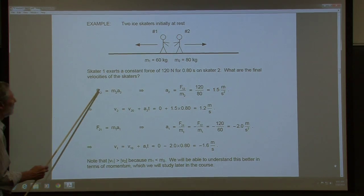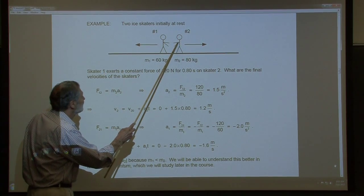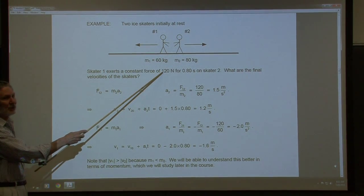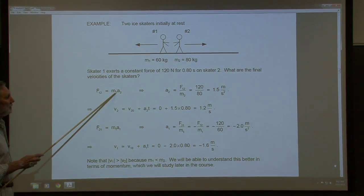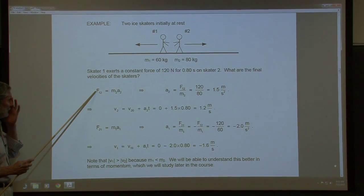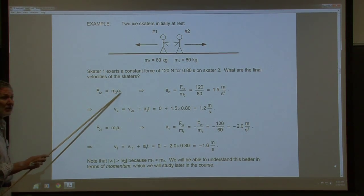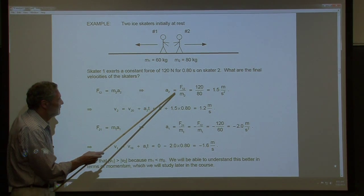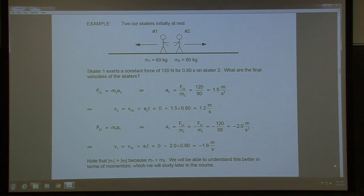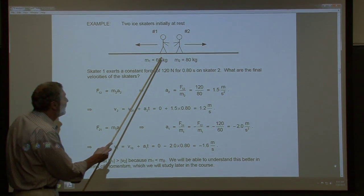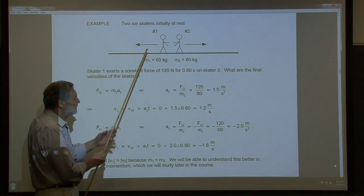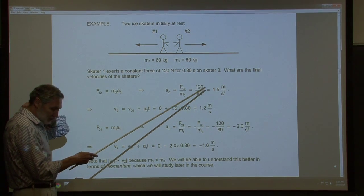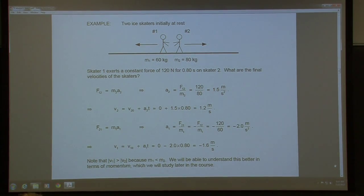Let's write down Newton's Second Law, focusing on the second skater first. F₁₂ is the force of one on two — 120 Newtons — and that's going to cause an acceleration. The force equals mass times acceleration, so we solve for acceleration. We plug the numbers in and get 1.5 meters per second squared. While there's this contact force, the acceleration of this person is 1.5 m/s² for 0.8 seconds.